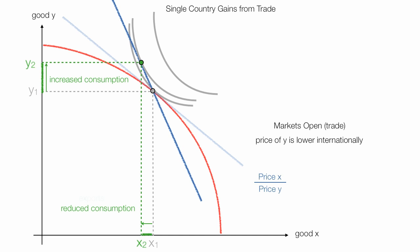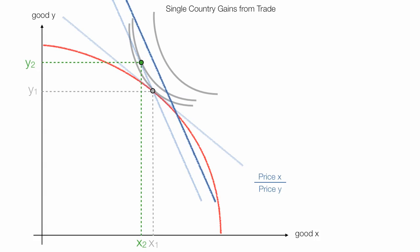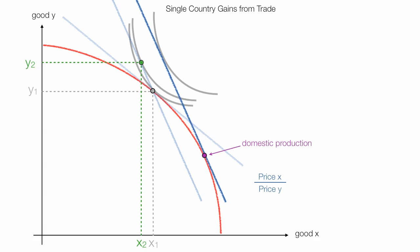Just like in consumer theory, a country can reach a higher indifference curve by shifting out its budget line — or the ratio of price X to price Y. So now the level of production rotates to the point where the blue line is tangent with the production possibility frontier. The country can reach a higher indifference curve, so its consumption moves to that green point where the blue line is tangent with the indifference curve.